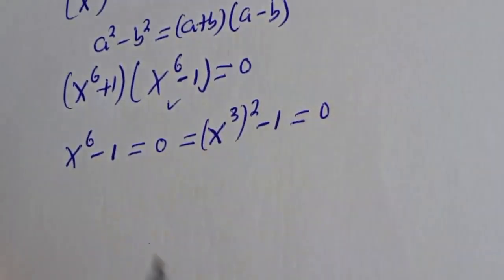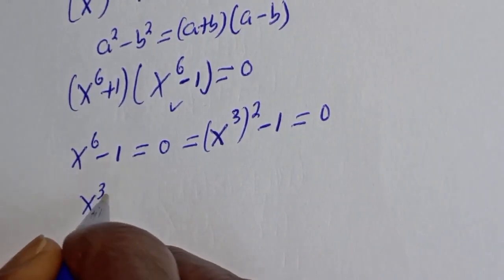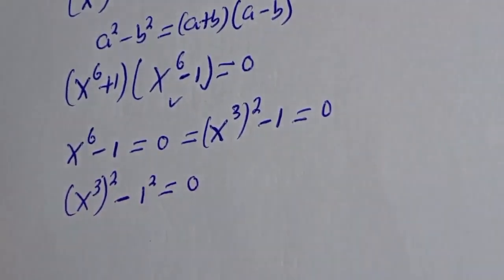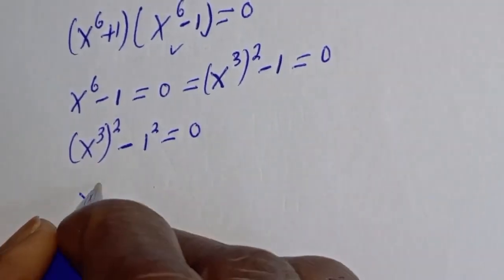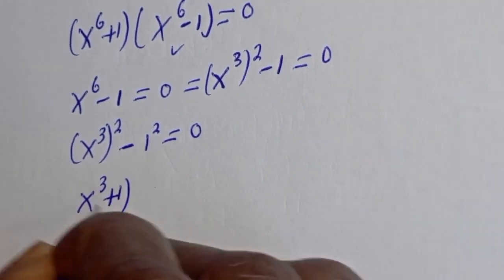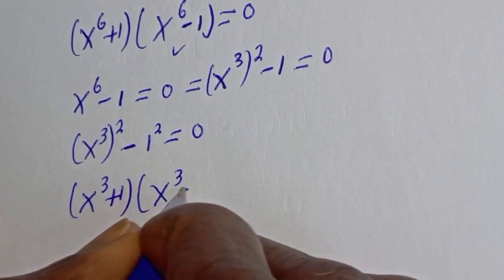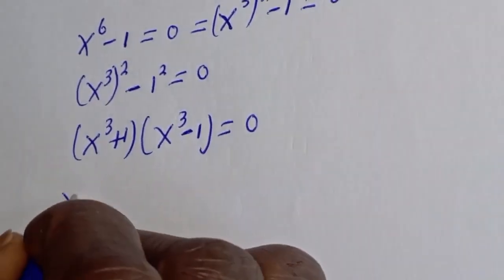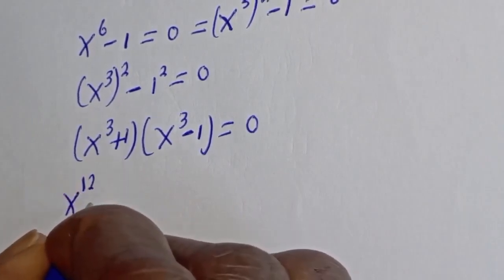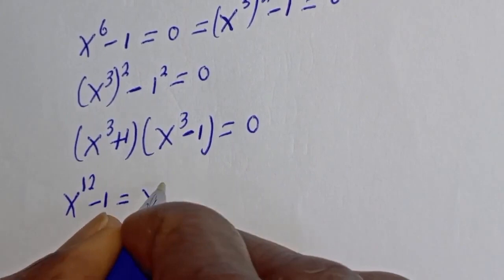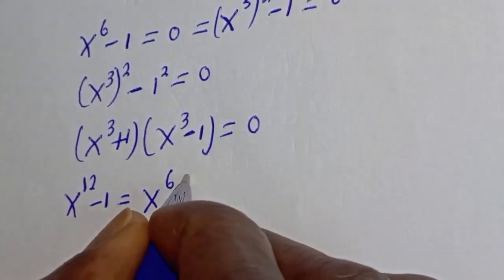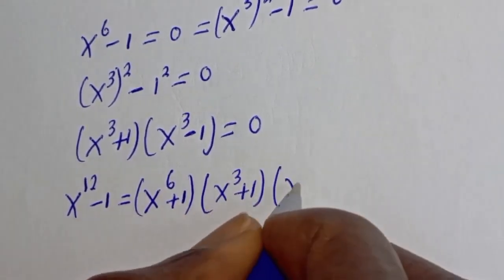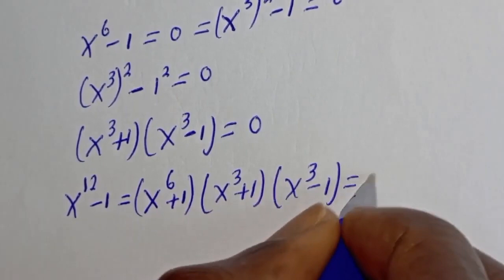Then s raised to power 3 squared minus 1 can be written as s raised to power 3 squared minus 1 squared is equal to 0. And this can be written as s raised to power 3 plus 1, bracket, s raised to power 3 minus 1, is equal to 0. Therefore, we have s raised to power 6 plus 1, bracket, s raised to power 3 plus 1, bracket, s raised to power 3 minus 1, equal to 0.